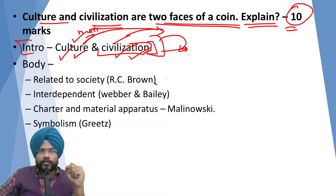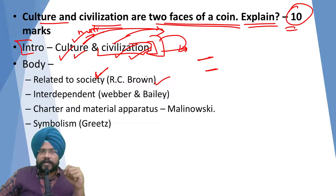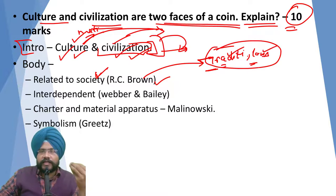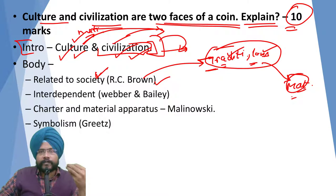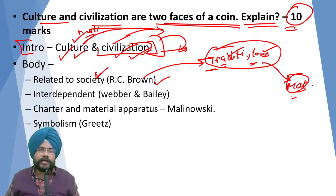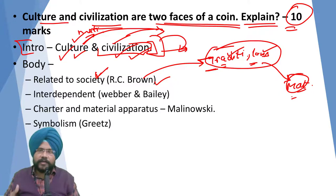For example, both culture and civilization work to maintain the social structure of a society. As Radcliffe-Brown showed, culture contains traditions and laws, and these traditions and laws dictate how the material apparatus of society will be used. So culture is related to the material apparatus — it governs how things are to be used. Ultimately, both work to establish the social structure.